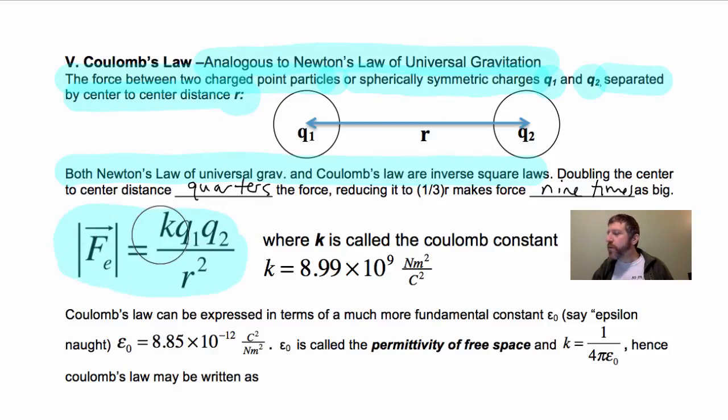And what this means, this vector in absolute value signs, that just means this is the magnitude of the force. Whenever you put absolute value signs around the vector, that means the magnitude. And the magnitude of the force is K, where K is the Coulomb constant. That's 8.99 times 10 to the 9. The units are Newton meter squared per Coulomb squared.